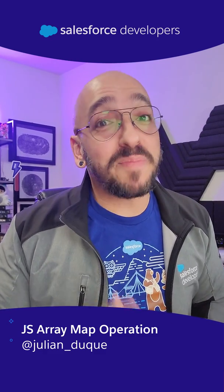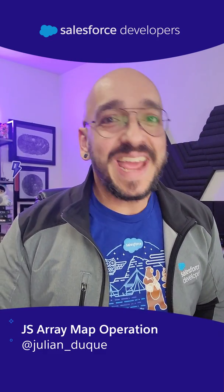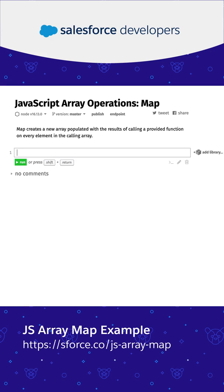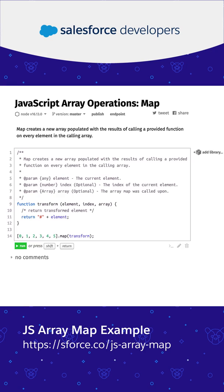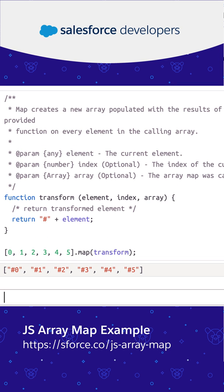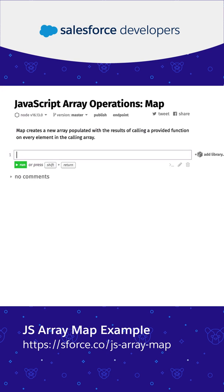Let's learn how to do a JavaScript array map operation in one minute or less. A map operation creates a new array populated with the results of calling a provided function on every element of the array. This function can be either named, anonymous, or an arrow function.